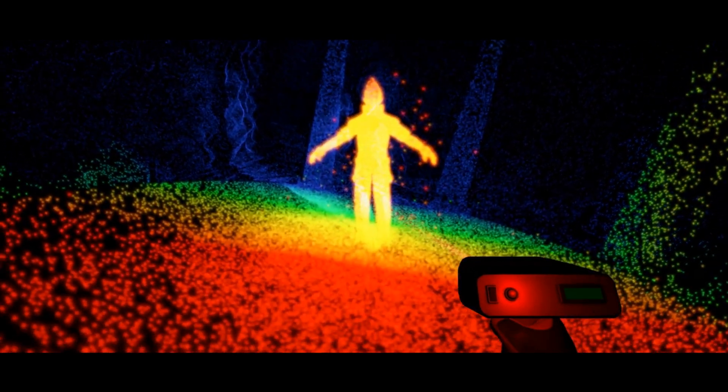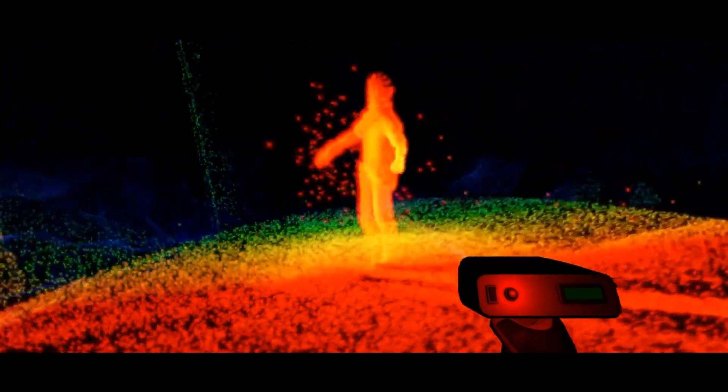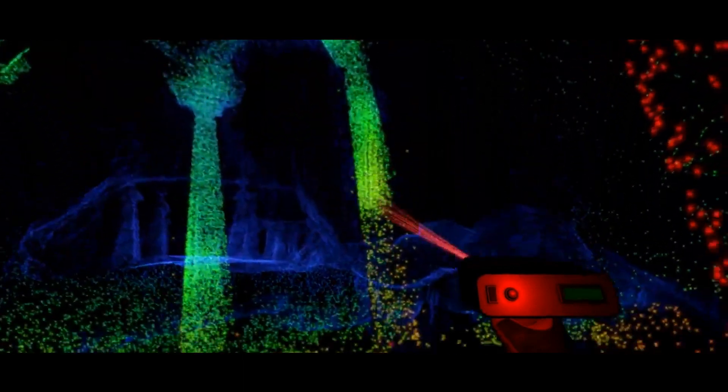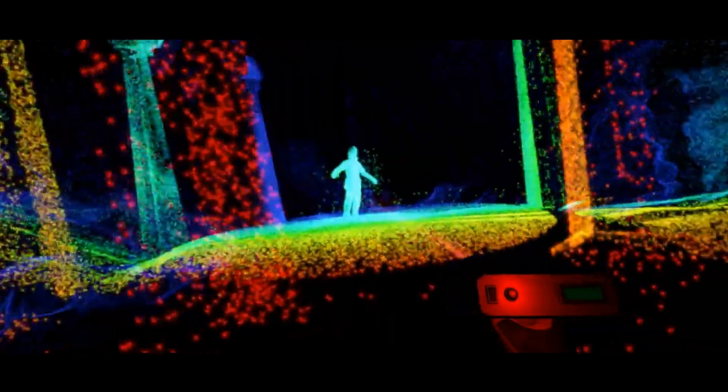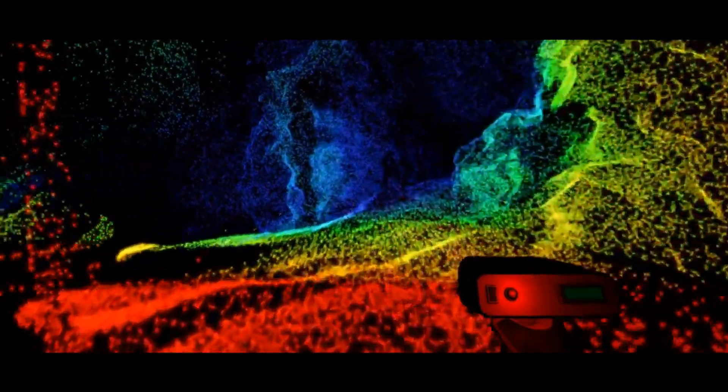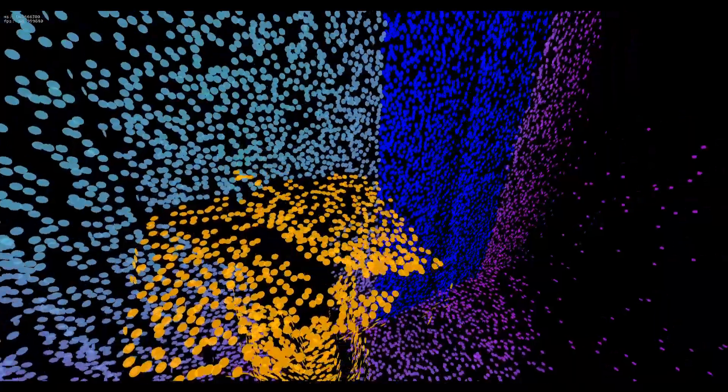But the problem is you cannot render 10 million particles without your GPU beginning to cry. So you have to do a bunch of work in order to optimize. And I think Scanner Sombra is doing something quite clever here from what I can tell. I think they're rendering all the particles that are up close as detailed quads and then far away I think they are rendering the particles as a texture so I think they're combining both methods.